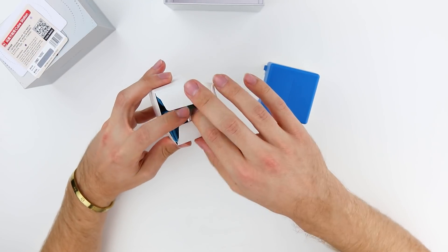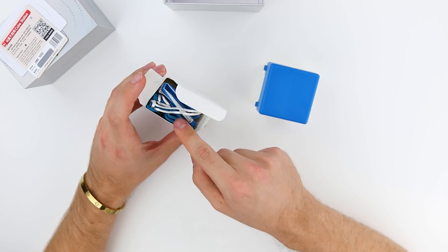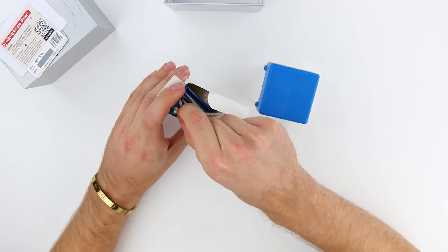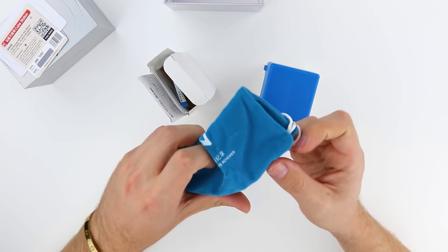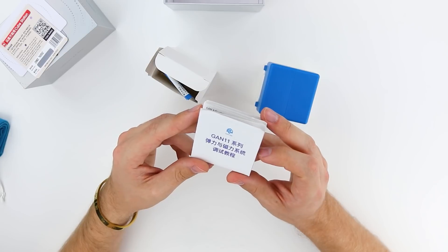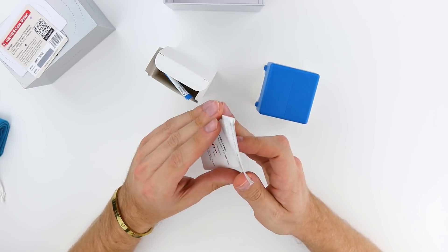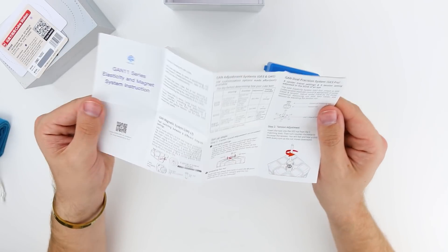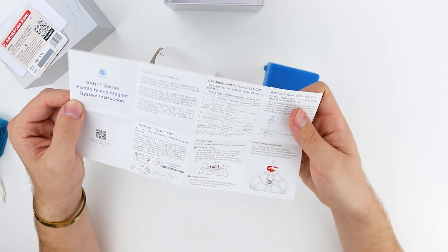So more than likely the accessories are going to be pretty standard. We have the GAN bag in there. Nothing really too crazy here. We haven't seen a redesign of the GAN bag for a while. And then we have a pamphlet that presumably goes over the functionality of the adjustment system, which is pretty much what it is.